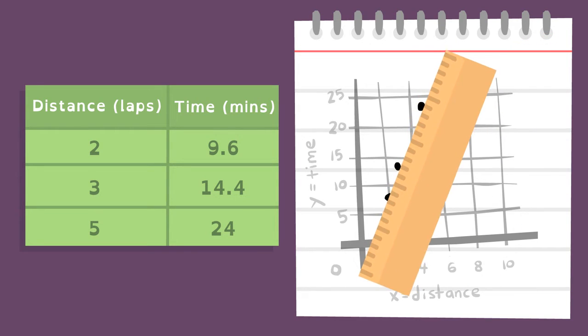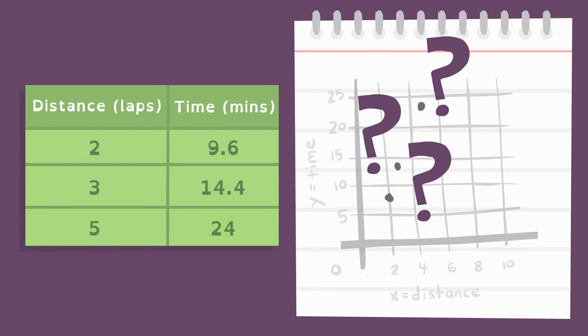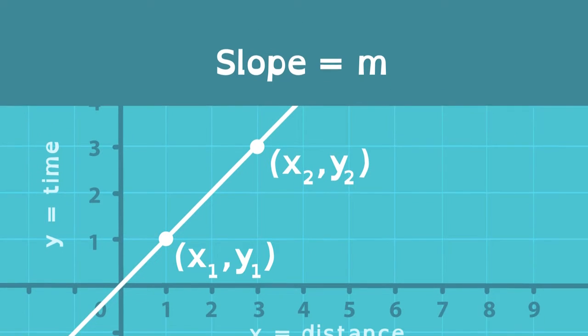Problem is, Jason can't tell if the line is straight, and therefore he can't tell if the robot speed is constant based on the rough plotting he's done. Slope can help.